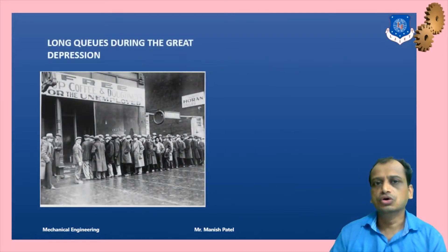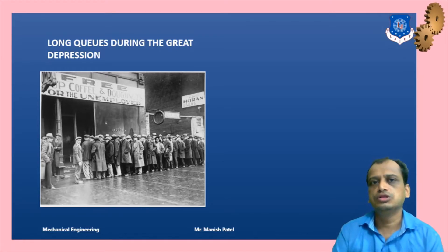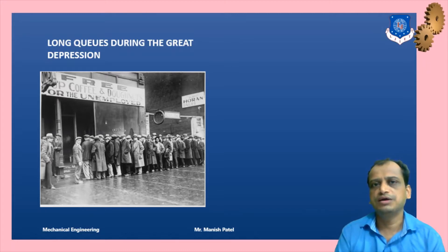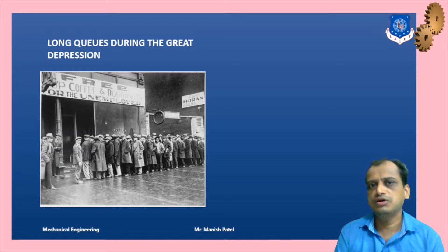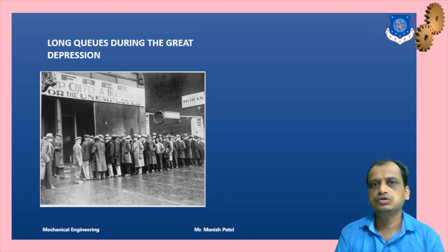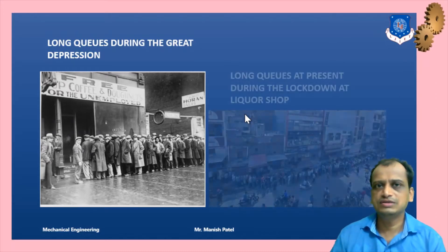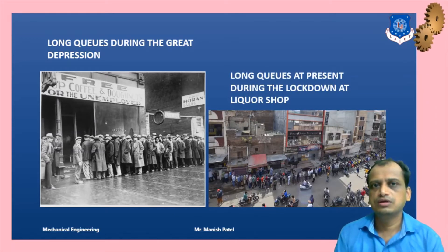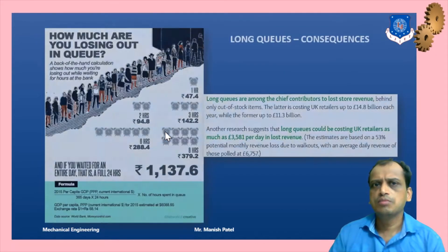Let's start with the importance of queuing theory. There were long queues during the Great Depression in the US during the 1930s — you can see long queues for food and supplies from the picture. Queues are prevalent throughout history, and even now you can see queues everywhere in banking, the retail sector, and at passport offices. During the recent corona pandemic, there were also long queues near liquor shops.